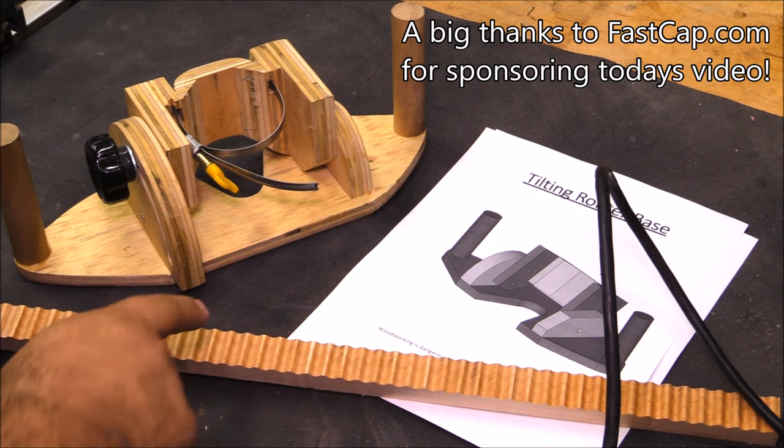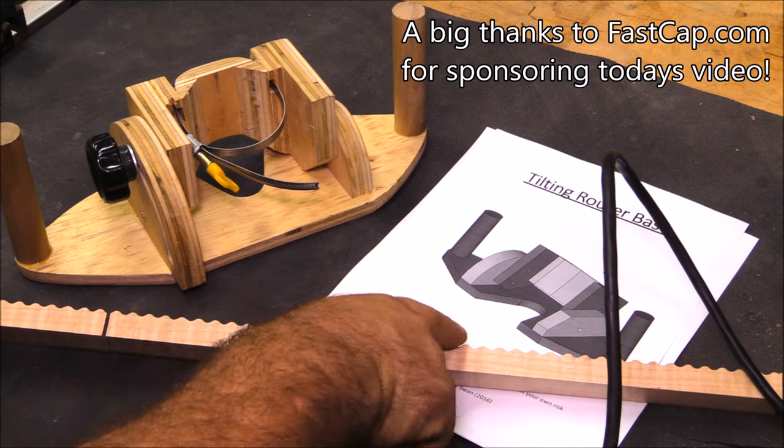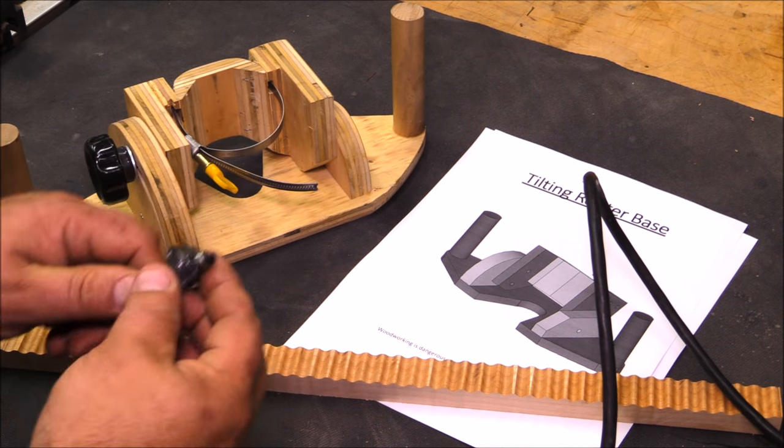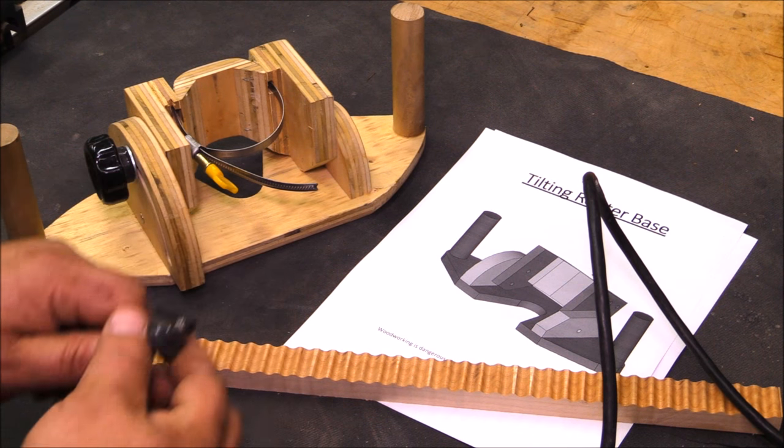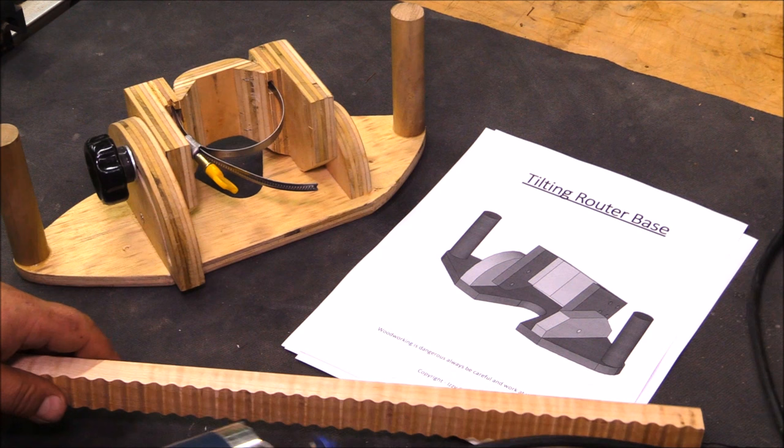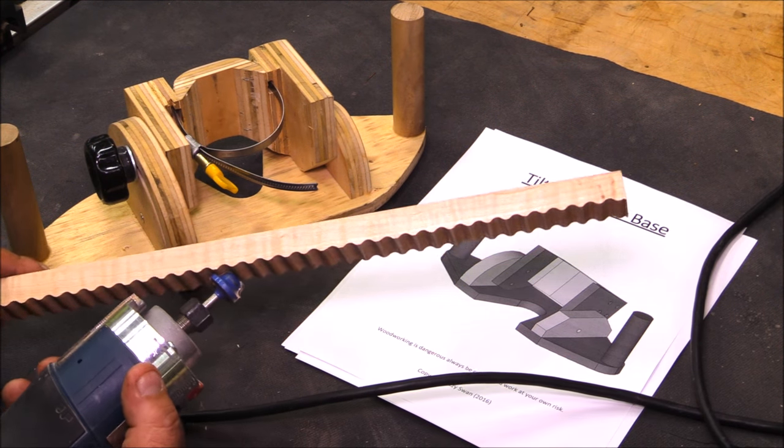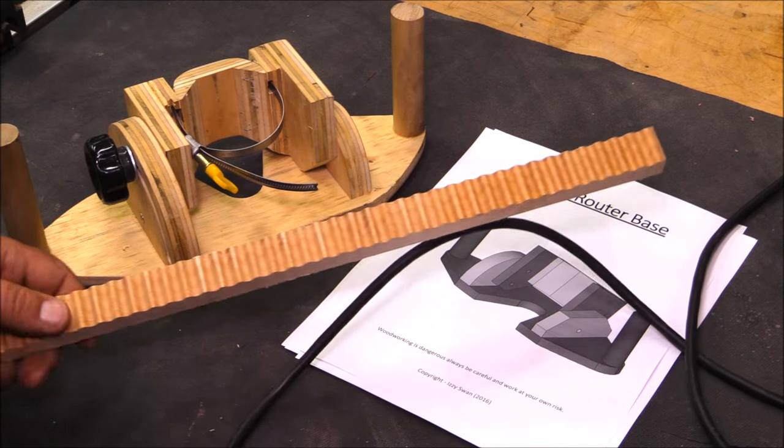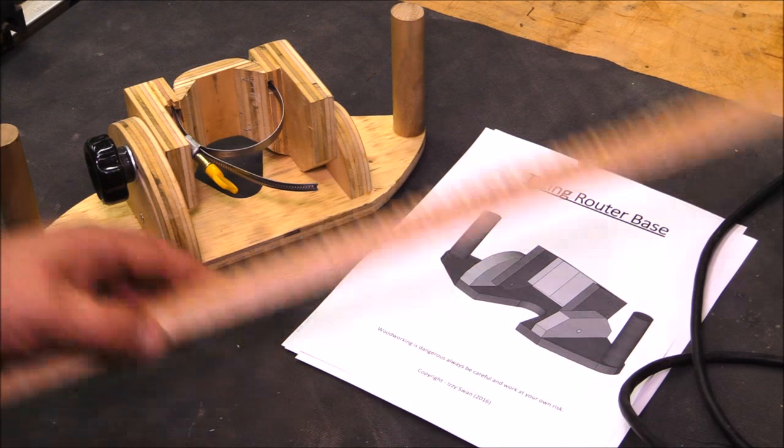In the last video, I made corrugated maple using a modified OG bit like this one. I took off the bearing and ground the top down, and by tilting the router on its side and making passes, I was able to create that profile. It ended up looking really cool. Here's the base that I used.